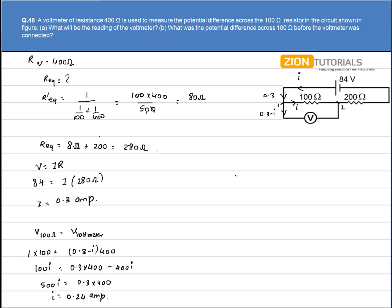Since I got the current flowing through 100 ohm resistor, I can calculate the potential drop across 100 ohm resistor. That is 0.24 into 100, which gives me 24 volt. This is the potential drop across 100 ohm, and since this resistor and voltmeter are in parallel, the voltmeter reading will be equal to 24 volts. That is the answer for the first part.